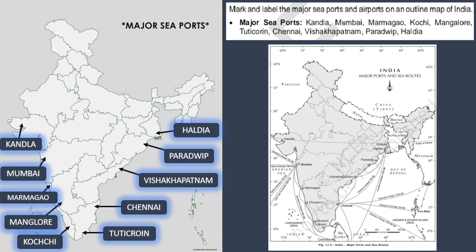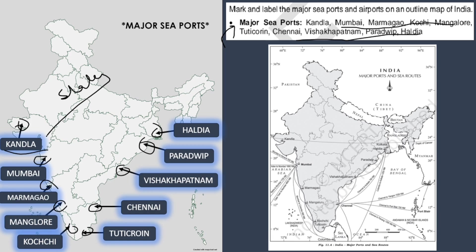Major seaports include Kandla, Mumbai, Marmagao, Kochi, Mangalore, Tuticorin, Chennai, Visakhapatnam, Paradip and Haldia. We should know which seaport is in which state. Marmagao is in Goa, Mangalore is in Karnataka, Paradip is in Odisha, and Haldia is in West Bengal. So these are the 10 major seaports which we can locate on the map — this is also in your book map.